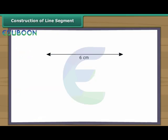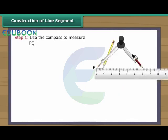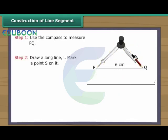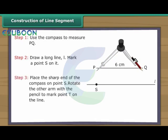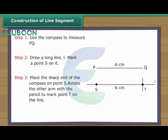Suppose a six centimetre long line segment PQ is given. We want to create another line segment ST of the same measurement. How do we do it without using a ruler? Use the compass to measure PQ. Draw a long line L and mark a point S on it. Place the sharp end of the compass on point S. Rotate the other arm with the pencil to mark point T on the same line. We have a line segment ST which is a copy of the line segment PQ.